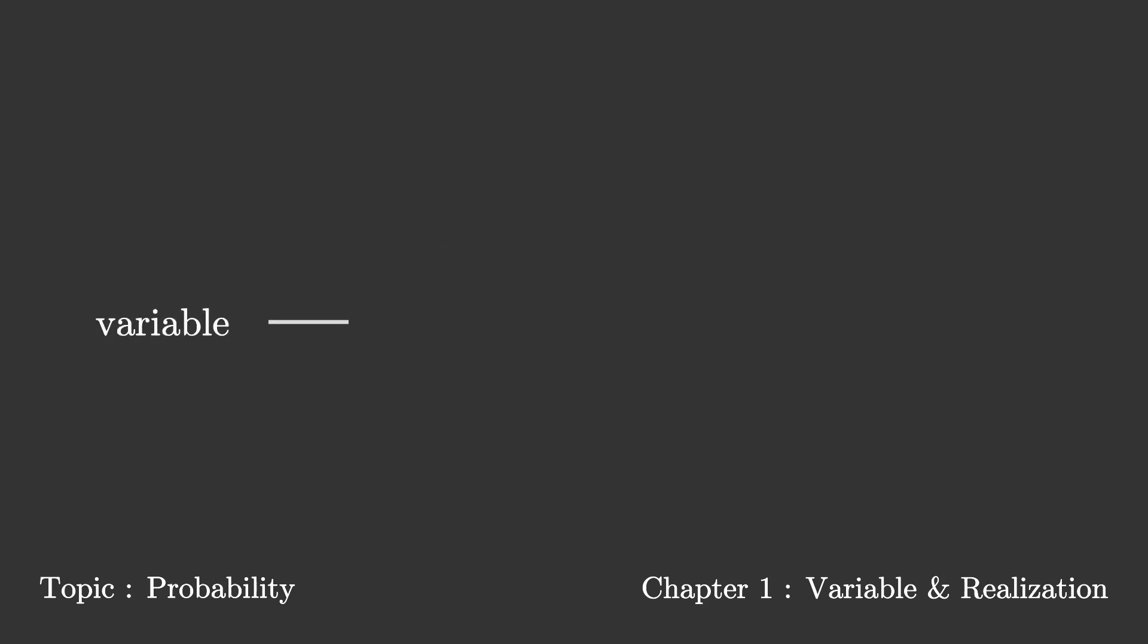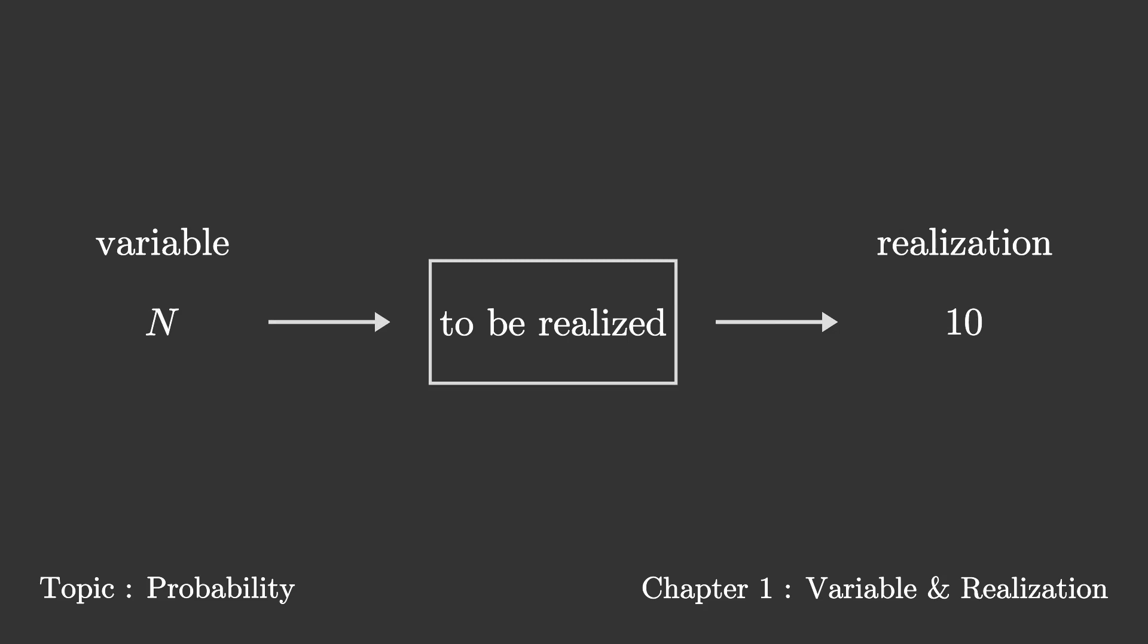When a variable is realized, its result is what we call a realization. For this example, the realization of variable N is 10.